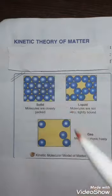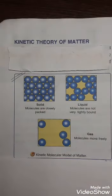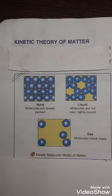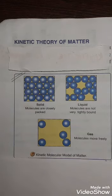Let us understand the kinetic theory of matter. The word 'kinetic' stands for movement. In the case of matter, it is composed of particles such as atoms or molecules, and these particles are in constant motion in all possible directions. The kinetic theory of matter states that matter is composed of a large number of tiny particles — atoms or molecules — that are in constant motion.